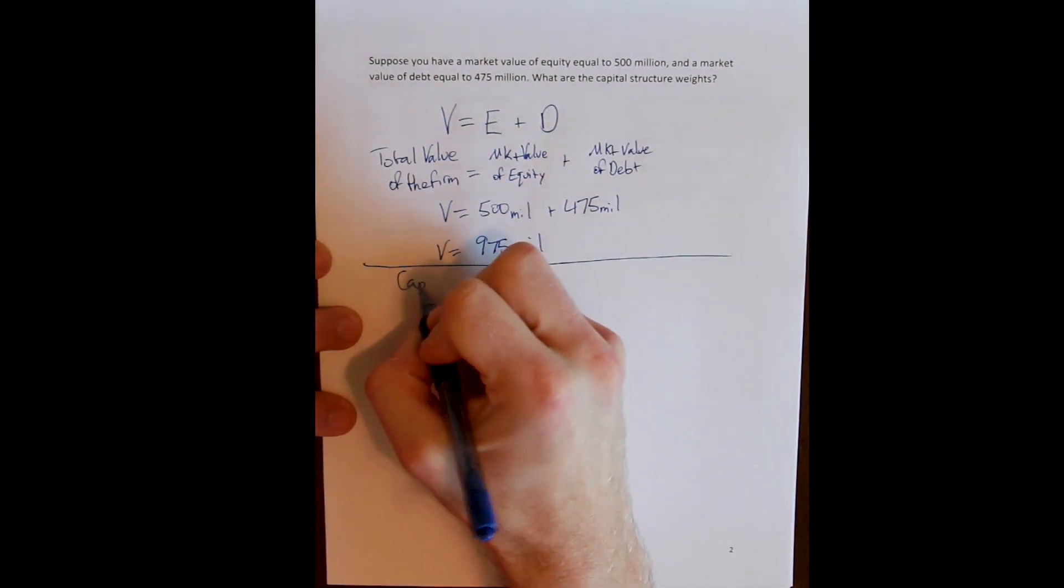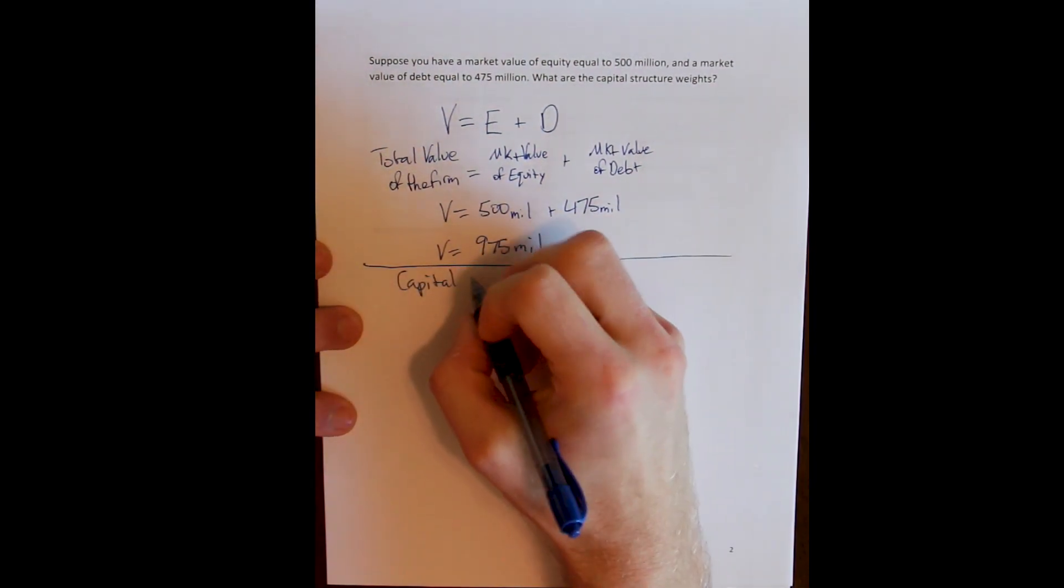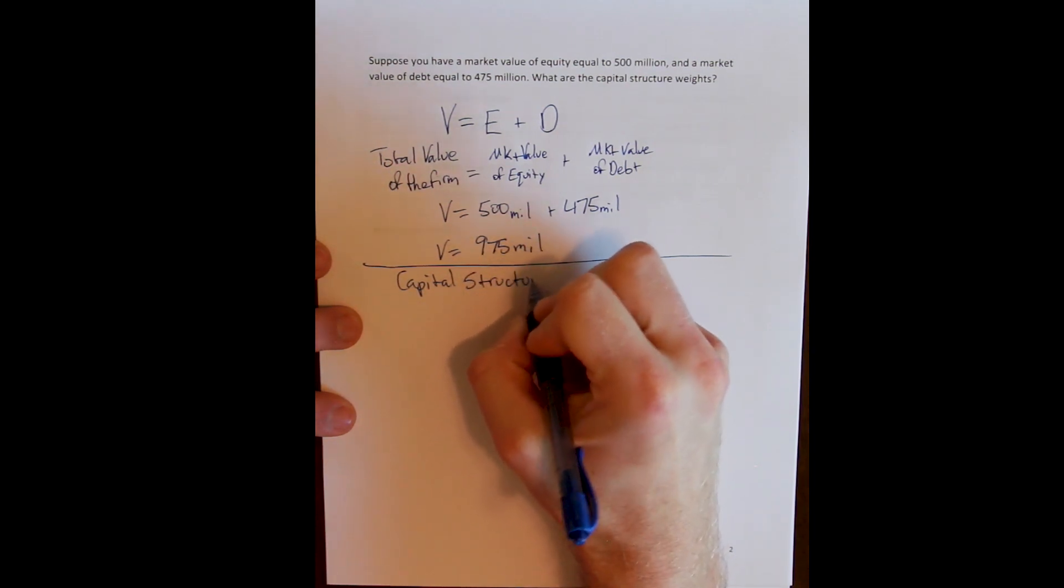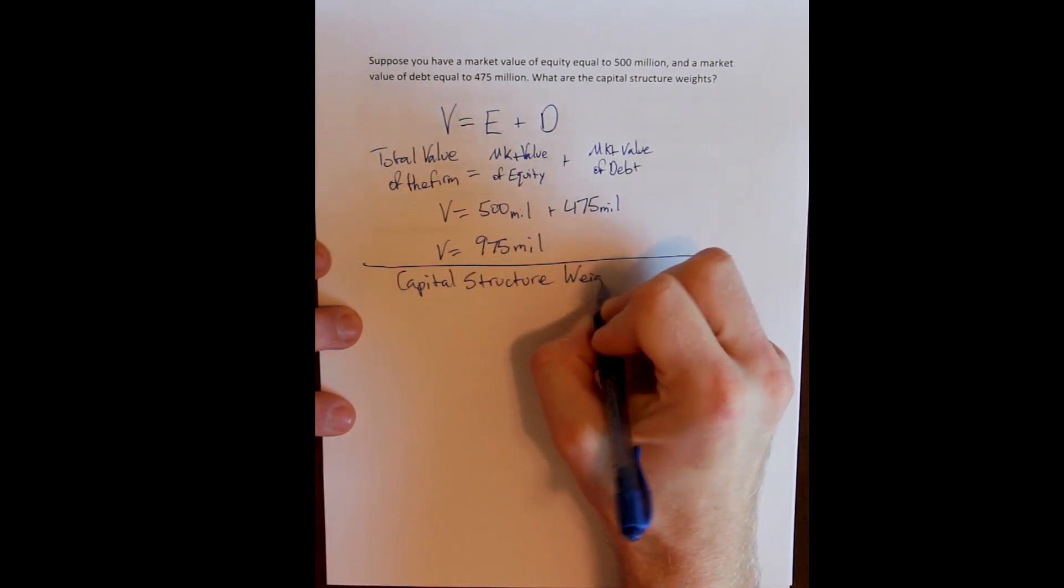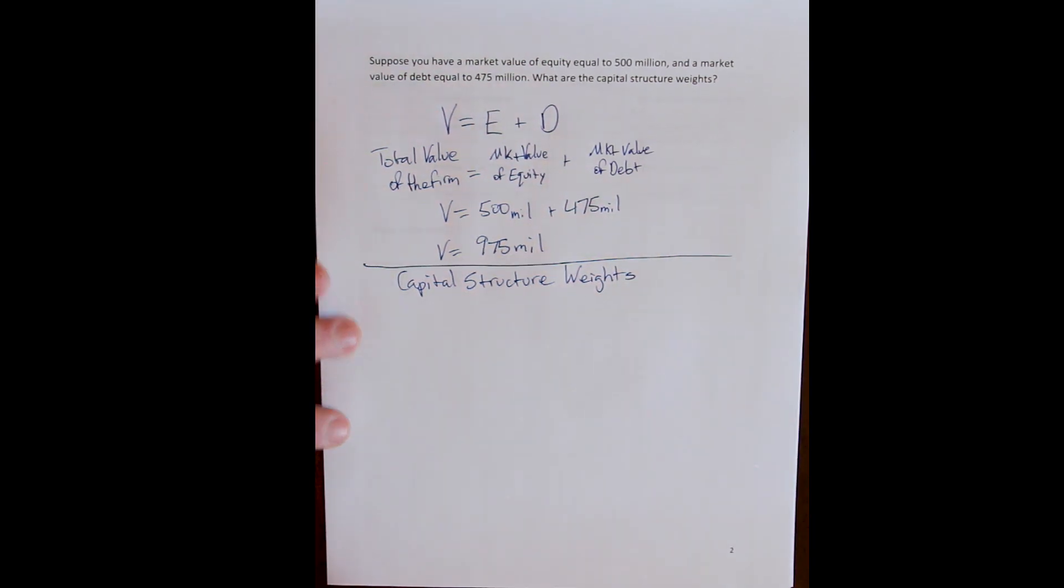Now the capital structure weights themselves are the result of dividing the market value of each source of capital by the total market value of the firm, in much the same way that we calculated the portfolio weights in the previous chapter.